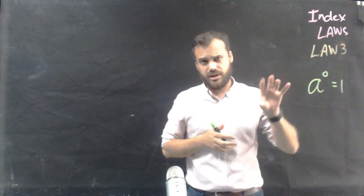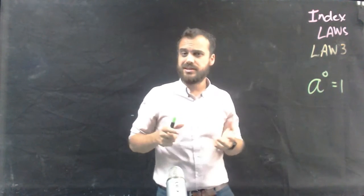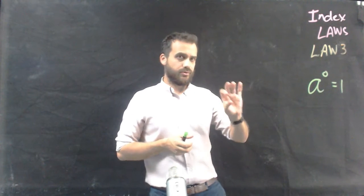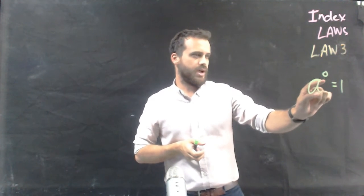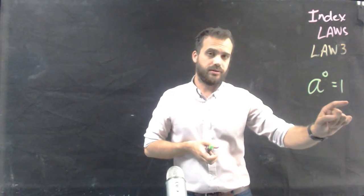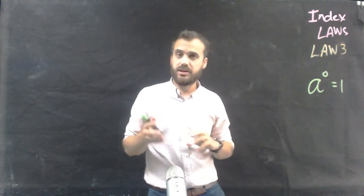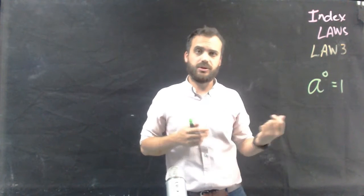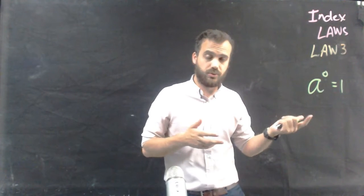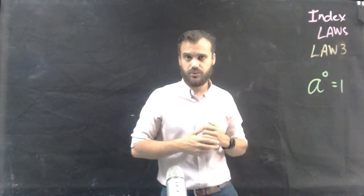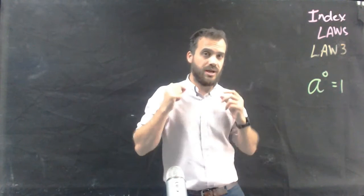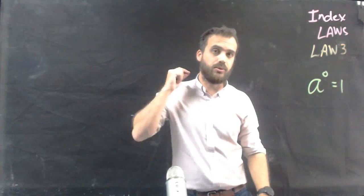Index law 3 is probably the easiest law, but it can also trick a lot of people up. Index law 3 says that anything raised to the power of 0 is always equal to 1. It could be the number 5 — 5 to the power of 0 is equal to 1, 7 to the power of 0 is equal to 1, x to the power of 0 is equal to 1, y to the power of 0 is equal to 1. Anything at all — take a cat and raise it to the power of 0, and the answer is going to be 1.